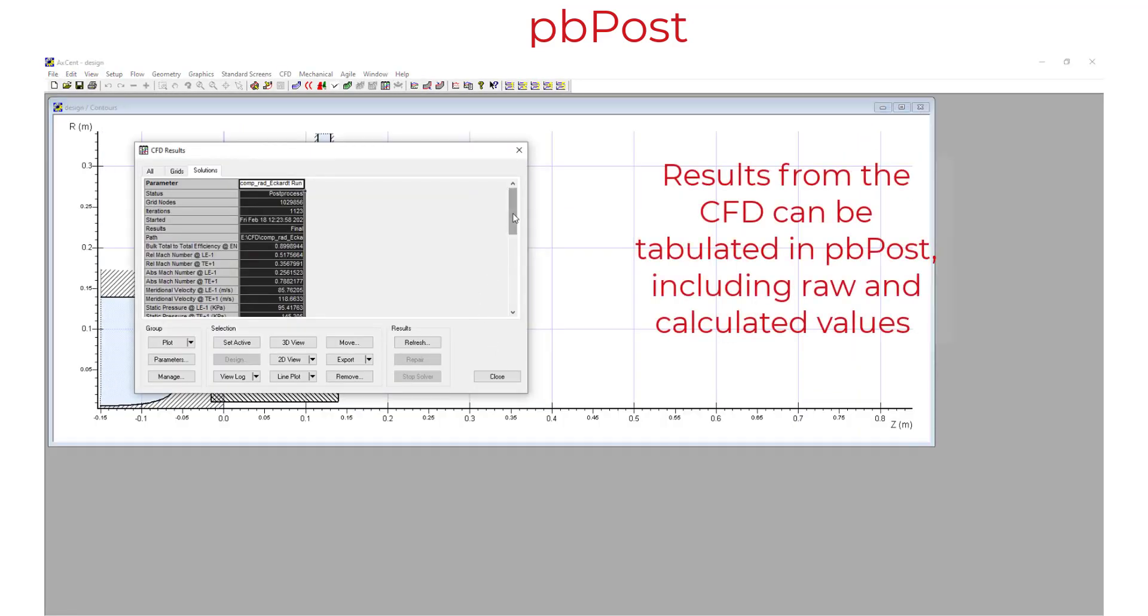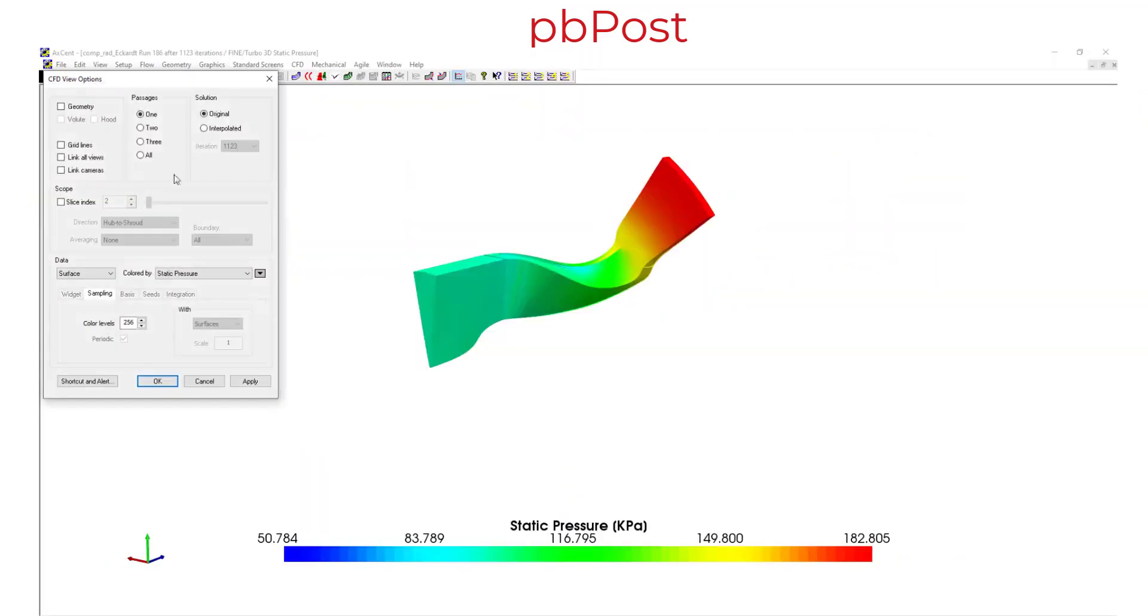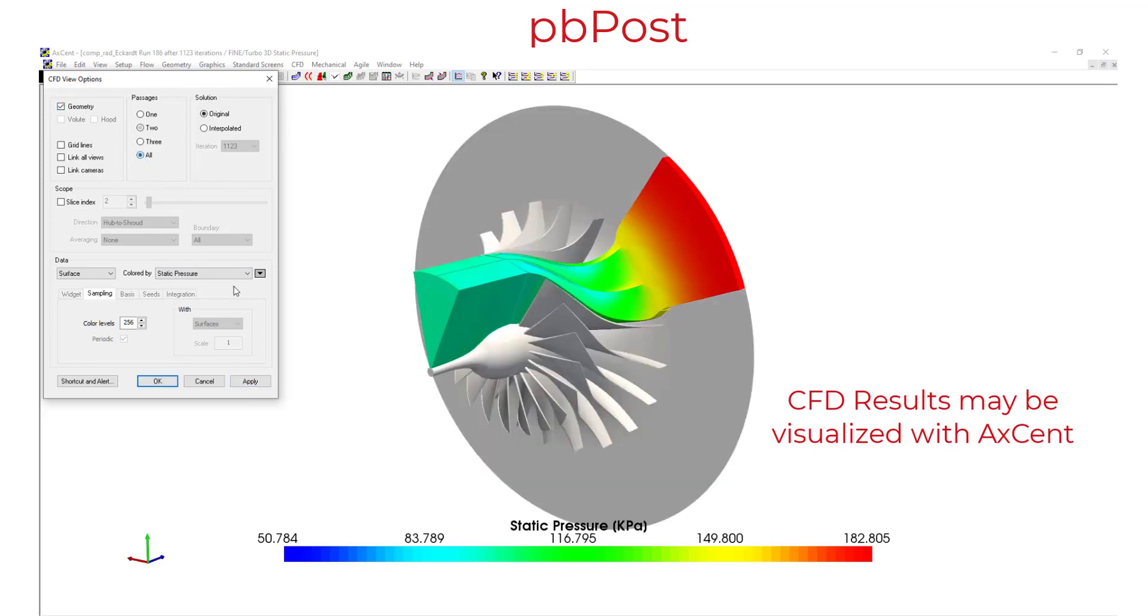With all the pre-processing done, we can run our Fine Turbo solution automatically from within Accent and post-process it with our PDPOST tool in various different ways.